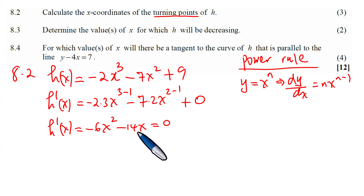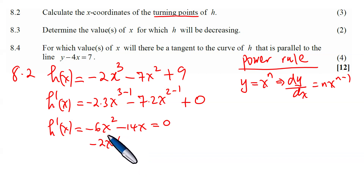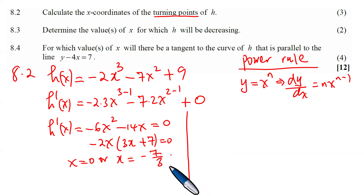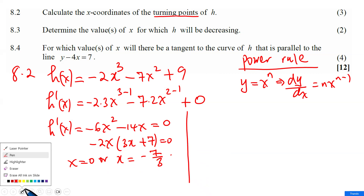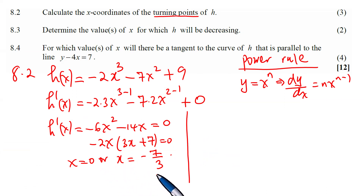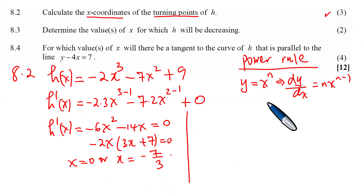To find turning points, set H'(x) = 0: −6x² − 14x = 0. Factor out −2x: −2x(3x + 7) = 0. This gives x = 0 or x = −7/3. These are the x-coordinates of the turning points. The examiner awarded 3 marks for this, and only the x-coordinates were requested — not the y-coordinates.